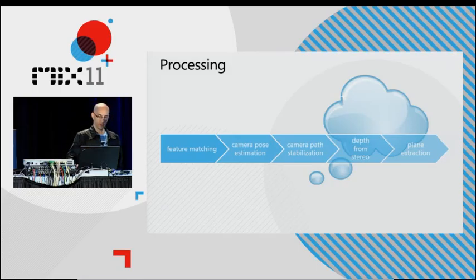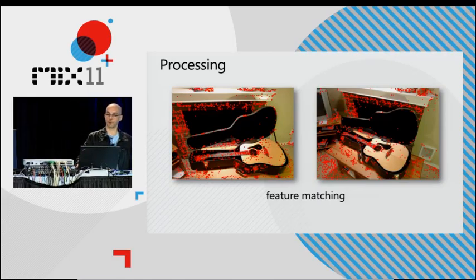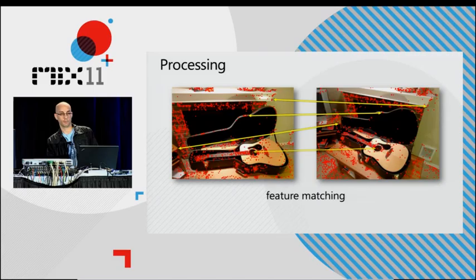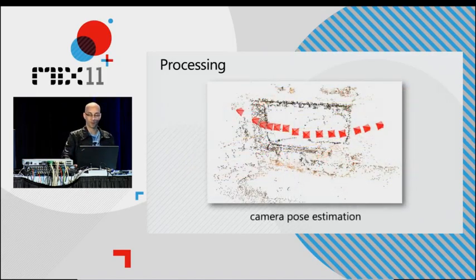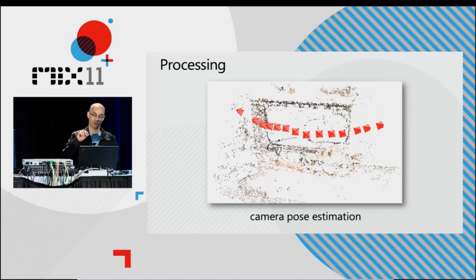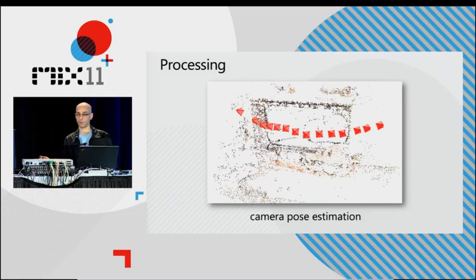The first step involves feature matching, where we're examining the images and looking for recognizable features that we can match between images. For example, the hole in the middle of the guitar on the left image matches with the hole in the middle of the guitar on the right image. Once we've done feature matching, we can use that information to estimate the 3D positions and orientations of the cameras, shown here as red pyramids. That information is processed in the same way that Photosynth processes the images — feature matching and camera pose estimation comes from the Photosynth pipeline.